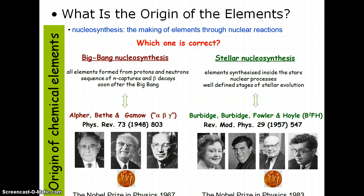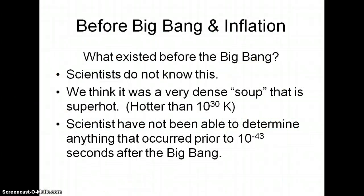So now we have two different ideas for how the origin of the elements came about. Let's look into this further and talk about the Big Bang. Before the Big Bang and before inflation, what existed? We have no idea. We think it was a very dense soup that was super hot — hotter than 10 to the 30 Kelvin — but we have not been able to determine anything that occurred prior to 10 to the negative 43 seconds after the Big Bang.